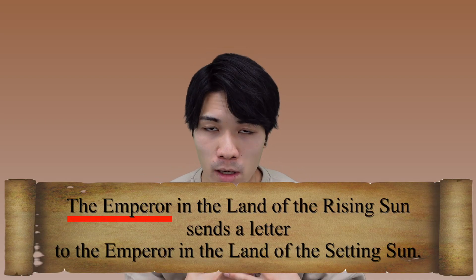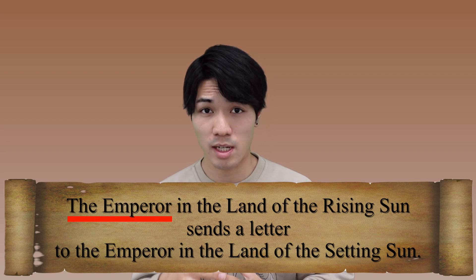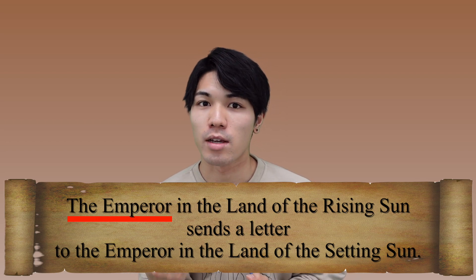This message made Emperor Yangdi angry. He said to his diplomat: 'If another rude letter comes from the barbarians, do not bring it to me.' Emperor Yangdi became angry because the King of Wa — another way of calling Japan — called himself the Emperor, not merely because of the use of the terms 'land of the rising sun' and 'land of the setting sun.'